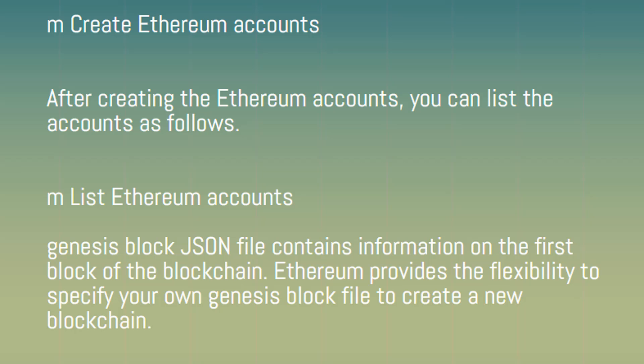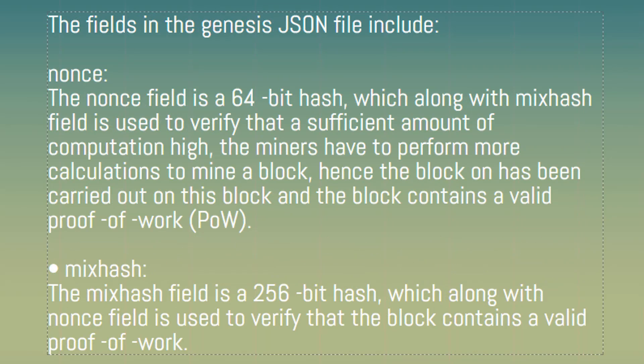The Genesis block JSON file contains information on the first block of the blockchain. Ethereum provides the flexibility to specify your own Genesis block file to create a new blockchain. The fields in the Genesis JSON file include NONCE. The NONCE field is a 64-bit hash which, along with the MIXHASH field, is used to verify that a block contains a valid proof-of-work.